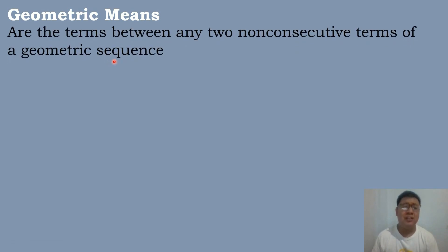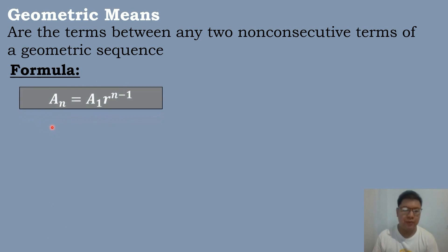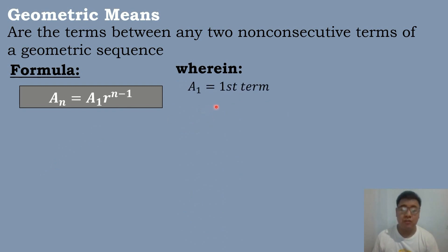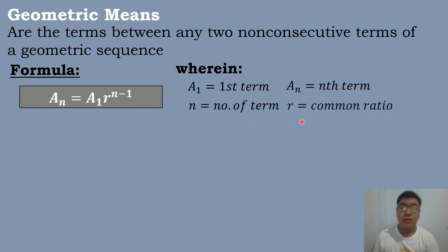Geometric means are the terms between any two non-consecutive terms of a geometric sequence. We have the formula for finding the geometric means: a sub n is equal to a sub 1 times r raised to n minus 1 power. Here, a sub 1 is the first term, n is the number of terms, a sub n is the nth term, and r is the common ratio.